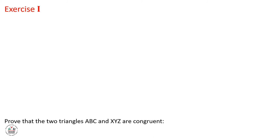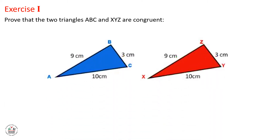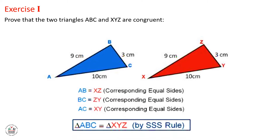Let's start by solving this simple exercise. Prove that the two triangles ABC and XYZ are congruent. Given that AB equals XZ equals 9 cm, and AC equals XY equals 10 cm. Also, the third side of the blue triangle equals the third side of the red triangle, so BC equals ZY equals 3 cm. Then these two triangles are congruent by Side-Side-Side, or SSS.